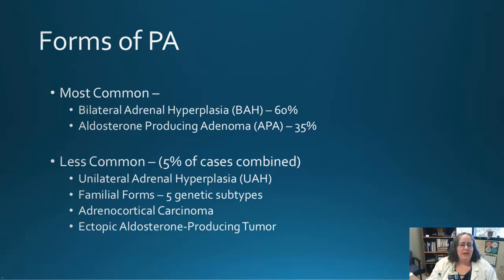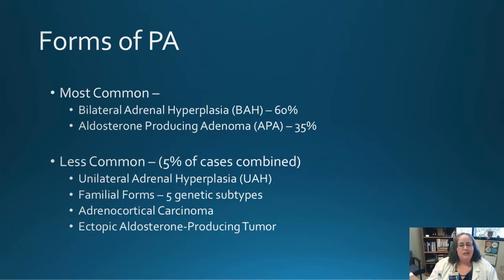There are two most common forms of PA: about 60% of patients have bilateral adrenal hyperplasia (BAH), and 35% have an aldosterone-producing adenoma, which requires surgery. The remaining 5% include unilateral adrenal hyperplasia, familial forms with five genetic subtypes, adrenal cortical carcinoma, and ectopic aldosterone-producing tumors.